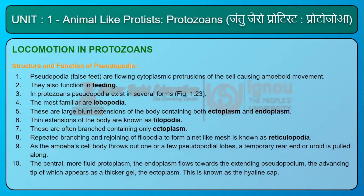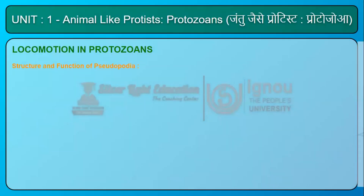Structure and Function of Pseudopodia: Pseudopodia are flowing cytoplasmic protrusions of the cell that cause amoeboid movement and also function in feeding. In protozoans, pseudopodia exist in several forms. The most familiar are lobopodia — large blunt extensions containing both ectoplasm and endoplasm. Thin extensions are known as filopodia, often branched and containing only ectoplasm. Repeated branching and rejoining of filopodia to form a net-like mesh is known as reticulopodia. As the amoeba cell body throws out pseudopodial lobes, a temporary rear end or uroid is pulled along; the more fluid endoplasm flows toward the extending pseudopodium whose advancing tip appears as a thicker gel — the ectoplasm — known as the hyaline cap.